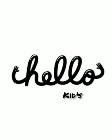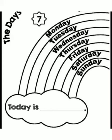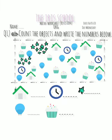Hello kids, good morning! How are you? Tell me, how's the weather today? Rainy? Today is Wednesday. In this worksheet, you have to count the objects and write the numbers below. First you have to count objects, count the stars.